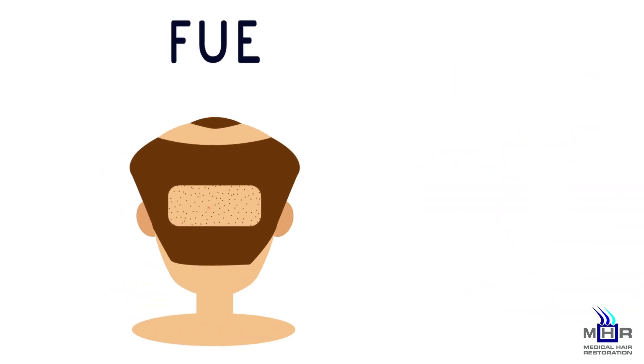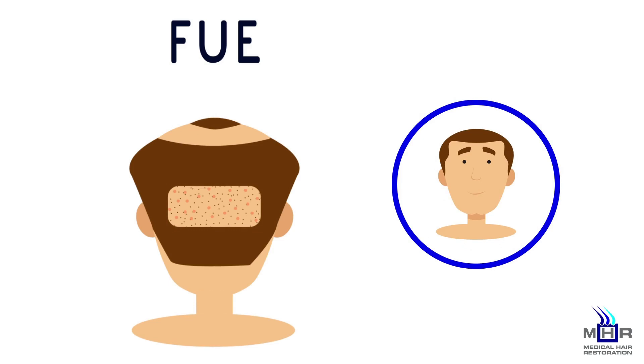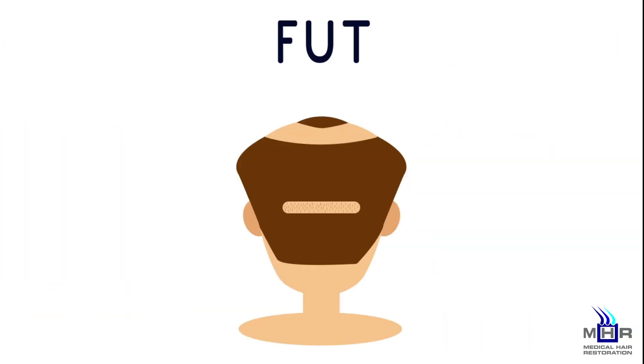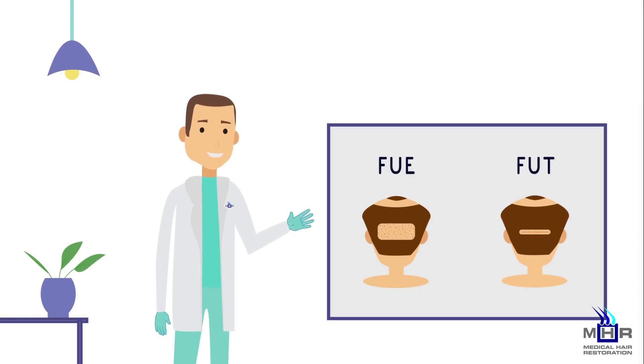FUE transplants form multiple tiny dotted-like scars spread out within the donor region, which allows patients to wear shorter hairstyles, where FUT transplants form a singular linear scar within the donor region, which we at MHR perform a skilled technique on known as trichophytic closure.